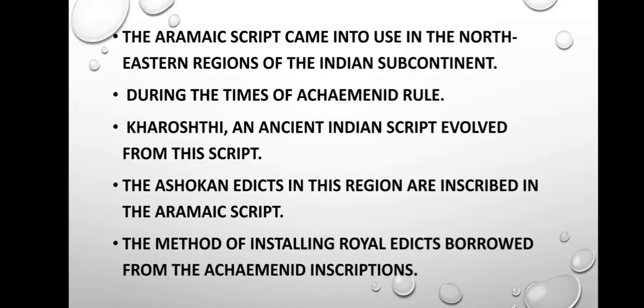Let's study the impact on script. During the times of the Achaemenid rule, Kharosthi, an ancient Indian script, evolved from the Iranian script. The Ashokan edicts in this region are written in this script. The method of installing royal edicts at vantage points seemed to be borrowed from the example of Achaemenid inscriptions.